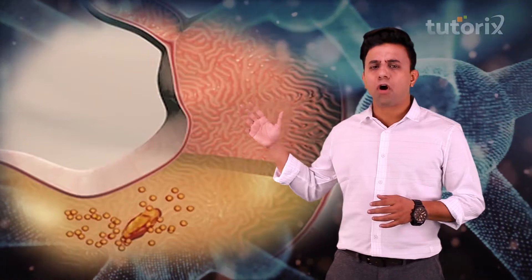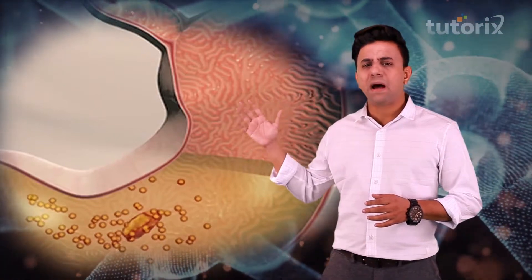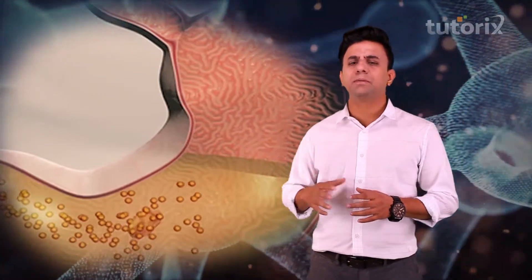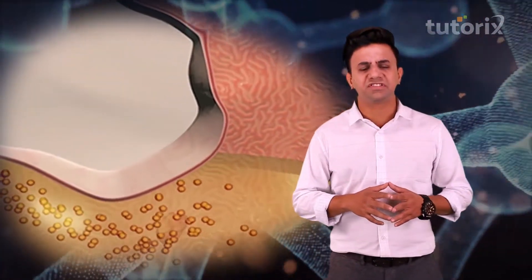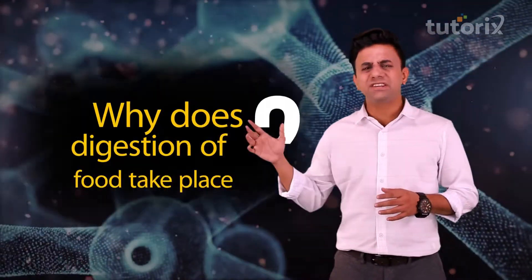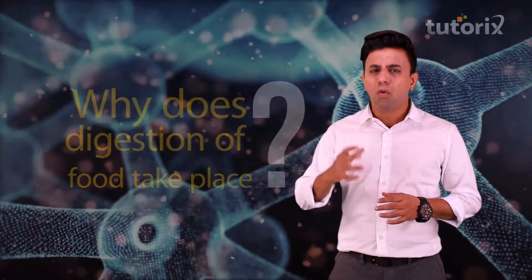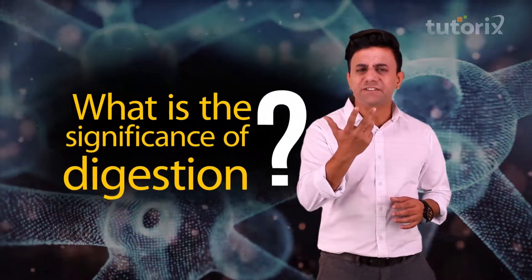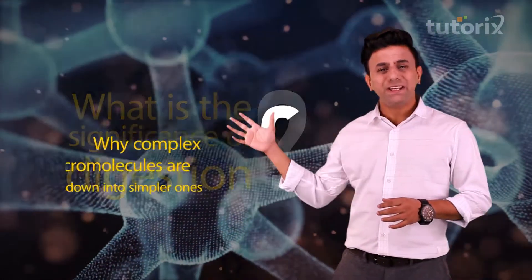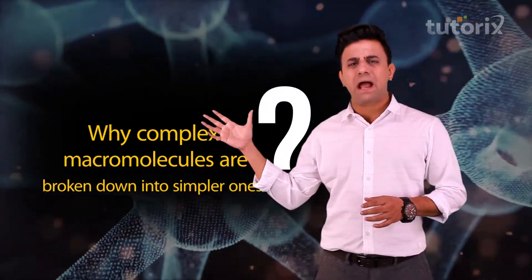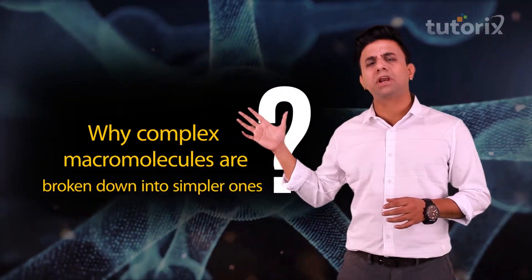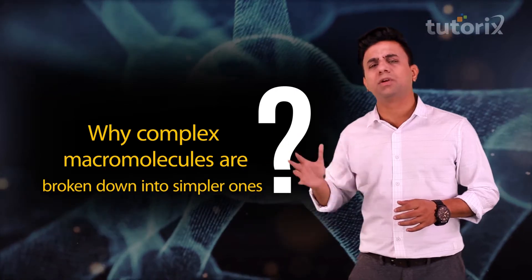Hi friends. We know that digestion is the breakdown of complex macromolecules into simple molecules. But have you ever thought why does digestion of food take place? What is the significance of this digestion? Why do these complex macromolecules have to be broken down into simpler ones?